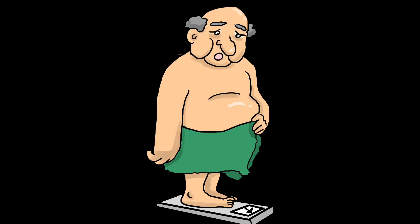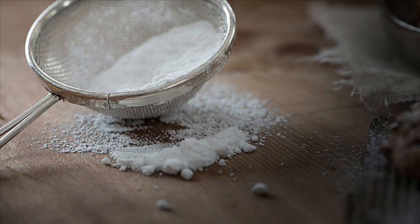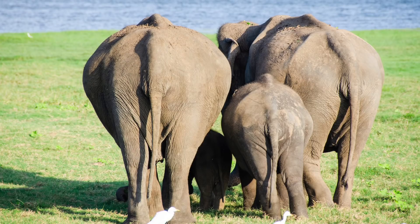Whatever stuff is left over in the small intestine after all the goodies have been absorbed goes into the large intestine, or colon, which is about five feet long. The large intestine does not absorb nutrition — no fats, carbohydrates, or proteins — however it acts like a sieve and water is absorbed from it into our body. By the time the food reaches the large intestine from the small intestine it is very liquidy, but by the time it comes to the end of the large intestine — the rectum — most of the water has been sieved out, so the stools become hard and solid.